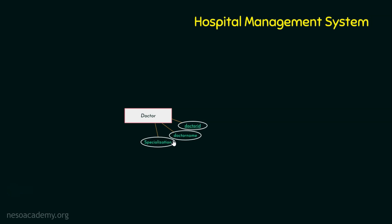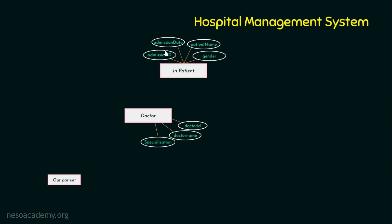Doctor is here. What about the next inevitable entity? Patient. When a hospital is concerned, we have two types of patients: inpatients and outpatients. We have separate entities for inpatient and outpatient. The attributes for inpatient are admission ID, admission date, patient name, and gender. Similarly, outpatient also has attributes like patient name, patient ID, and doctor name — because the outpatient is scheduled for an appointment with a doctor. Additional fields like gender and location are also required.